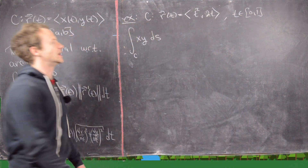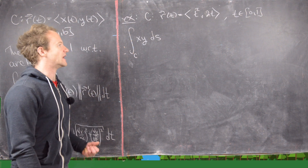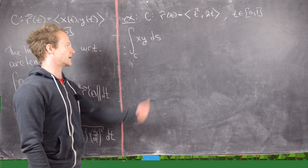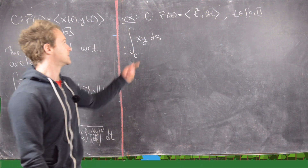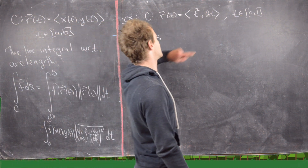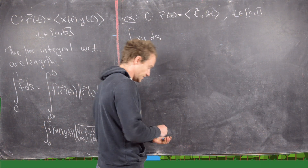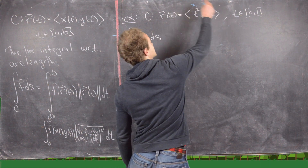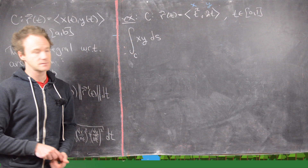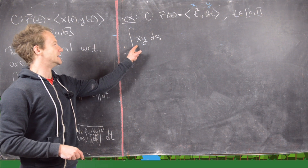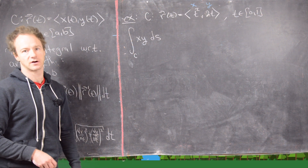In this video we're going to do three examples of line integrals with respect to arc length. The first one: our curve is given by R(T) = (T², 2T), so the X component is T² and the Y component is 2T. We want to integrate XY ds over this curve.